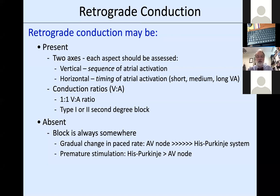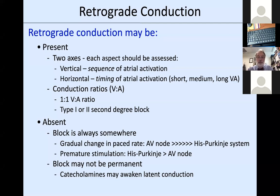Block always occurs somewhere. With gradual incremental pacing, the AV node fatigues first—the His-Purkinje system actually improves with gradual rate increase. But with premature stimulation, it's the opposite: the His-Purkinje system is not a fan of surprises. Its refractoriness is gauged from the prior RR interval, so a short coupling interval is likely to block there. We take great advantage of that with our maneuvers.